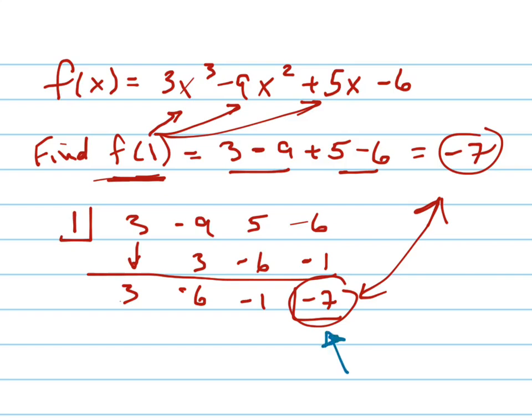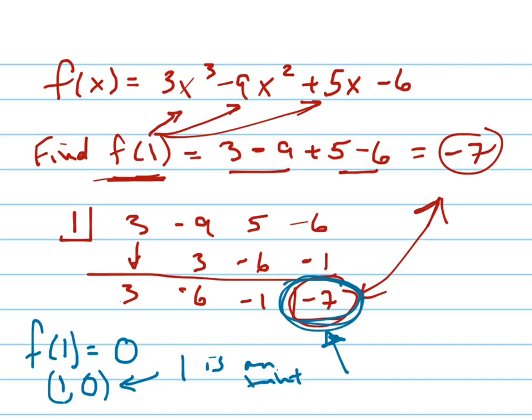that means that f of 1 equals 0, which means 1, 0 is a point on your graph, which means 1 is an x-intercept. If you got a 0 here, which we didn't for this particular one, but that's why we're always looking to find the 0 in that place. Because then if we have a 0 there, then this thing right here is the other factor.